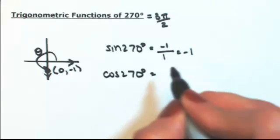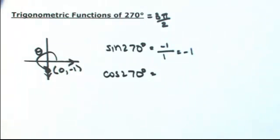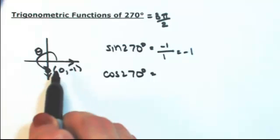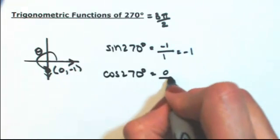Cosine of 270 degrees, so adjacent over hypotenuse. The adjacent is zero because we're not moving anywhere to the left or to the right. Hypotenuse is 1.